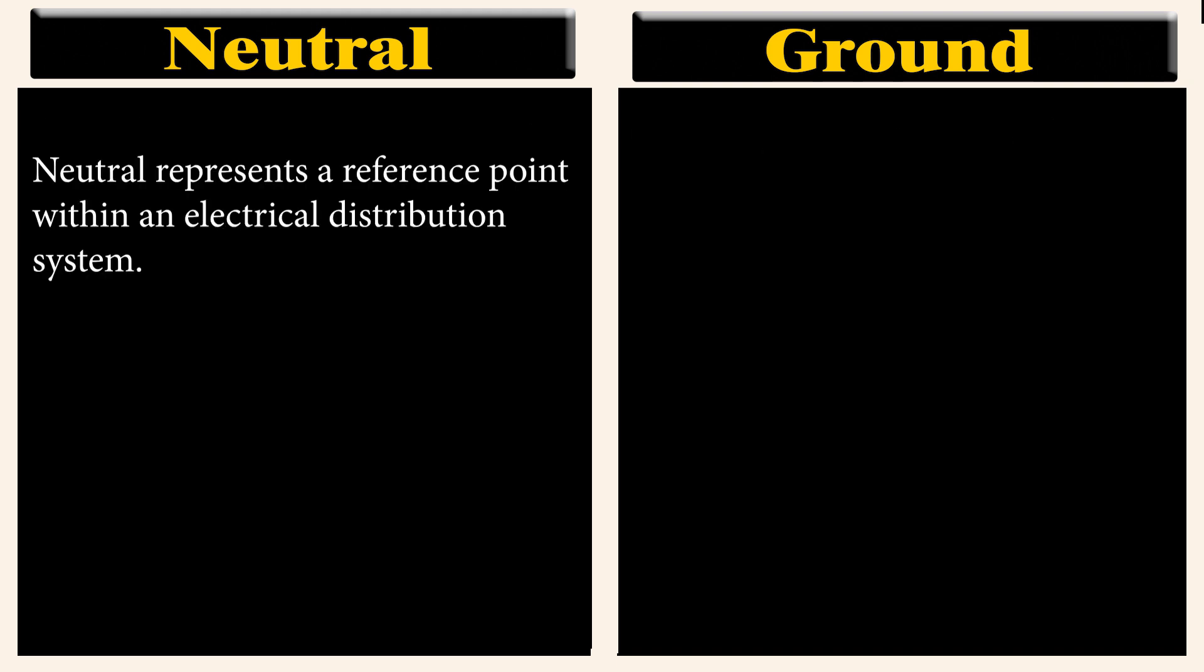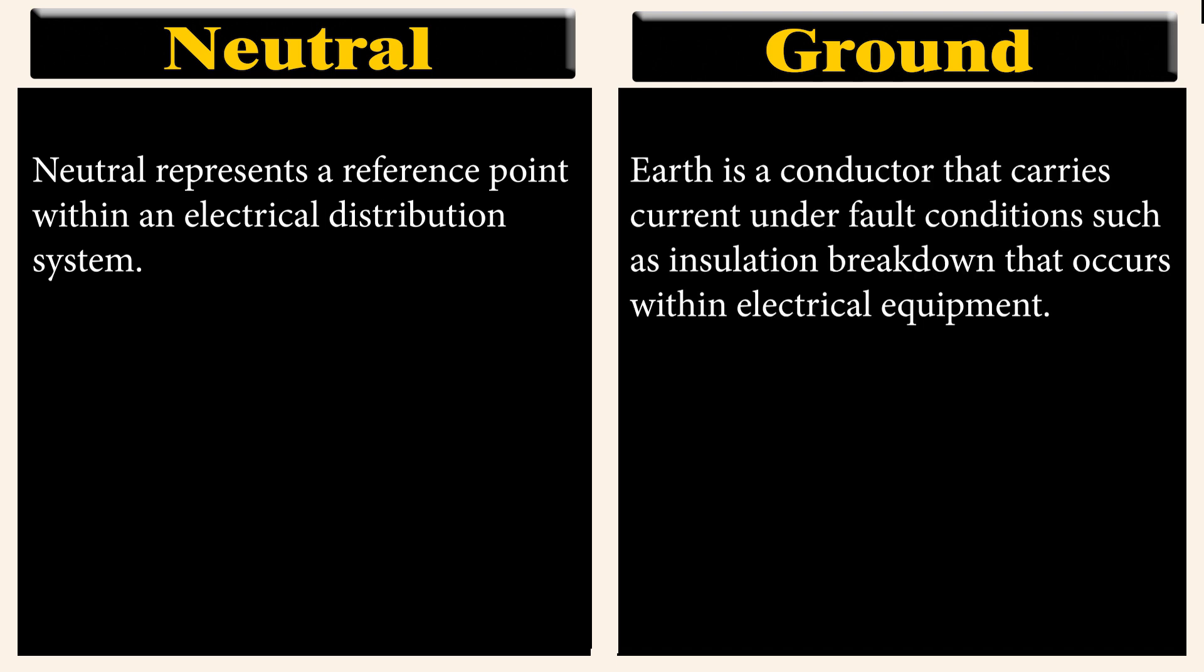Neutral represents a reference point within an electrical distribution system. But earth is a conductor that carries current under fault conditions such as insulation breakdown that occurs within electrical equipment.